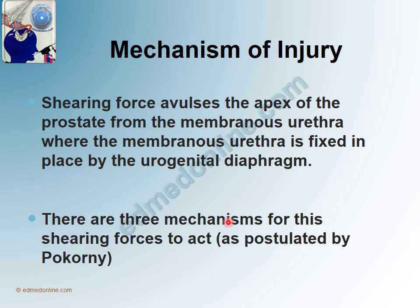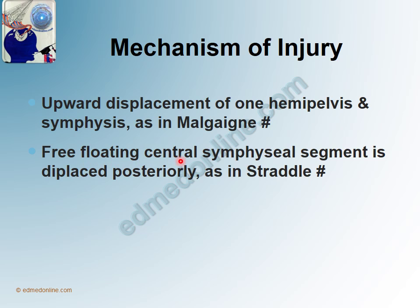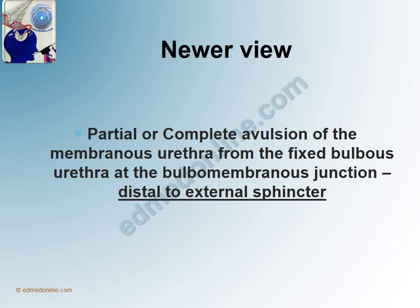There are three mechanisms described by Pocorni. First, upward displacement of one hemipelvis and symphysis, as occurs in a Malgaigne fracture with disruption of the sacrum and sacroiliac joint. Second, a free-floating central symphysial segment displaced posteriorly, occurring in a straddle fracture where all four pubic rami are fractured, or in pubic symphysis diastasis. Third, stretch of the membranous urethra until it ruptures.